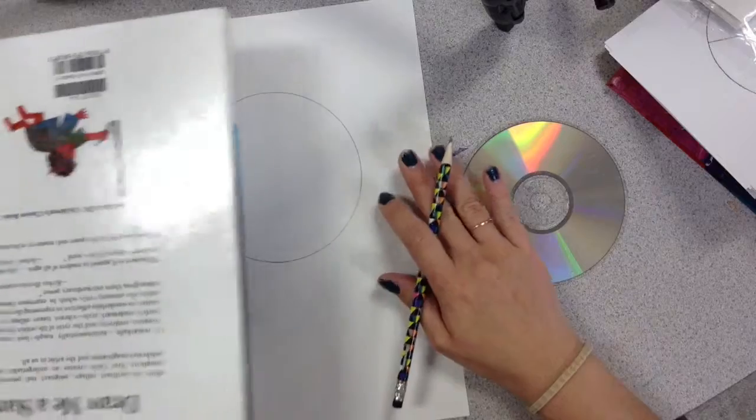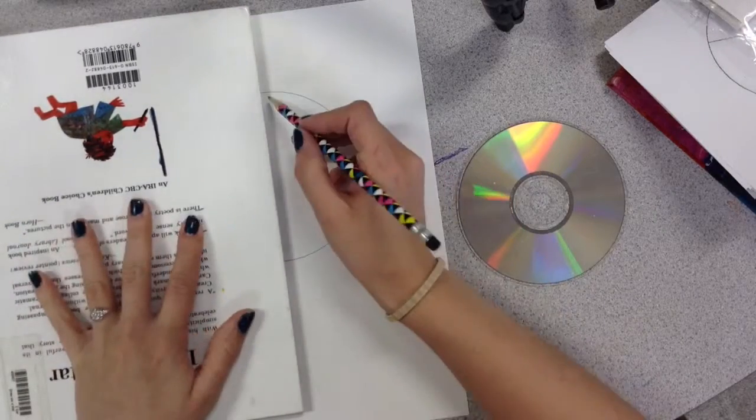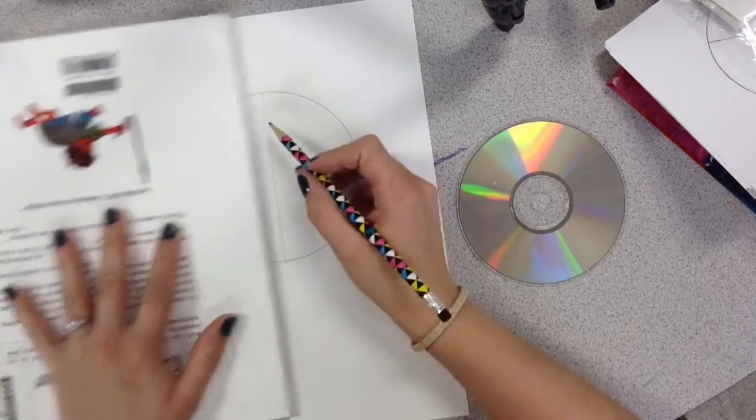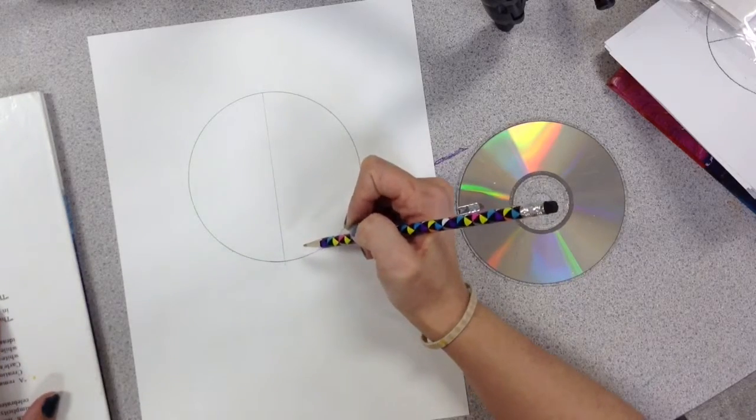The easiest way to do that is we'll start, we'll make one line all the way down. We're going to work lightly in our pencil because we're going to need to change things.